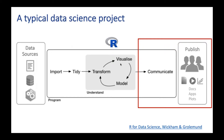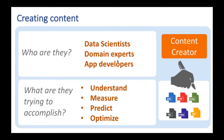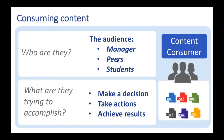Today we're talking about the last part of that workflow: communicate. Communication involves two parties. The first is the content creator — the data scientists, domain experts, or app developers — whose job is to understand, measure, predict, and optimize systems and analyses. Their output is typically artifacts like documents, applications, or plots. The second party is the content consumer — managers, peers, or other stakeholders — who may or may not know R, but whose job is to take what you've learned, make decisions, and take action.